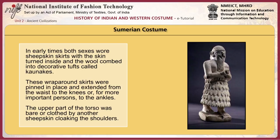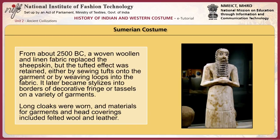In early times, both sexes wore sheepskin skirts, with the skin turned inside and the wool combed into decorative tufts called corniches. These wrap-around skirts were pinned in place and extended from the waist to the knees or, for more important persons, to the ankles. The upper torso was bare or clothed by another sheepskin cloaking the shoulders. From about 2500 BCE, a woven woolen and linen fabric replaced the sheepskin, but the tufted effect was retained, either by sewing tufts onto the garment or by weaving loops into the fabric. It later became stylized into borders of decorative fringe or tassels on a variety of garments.